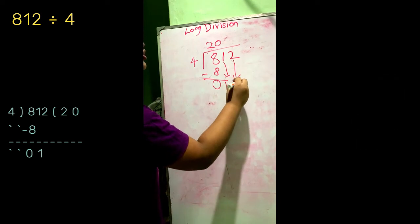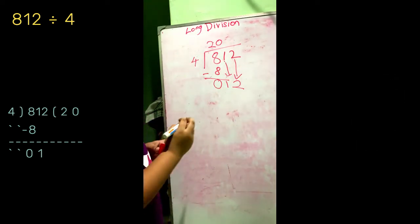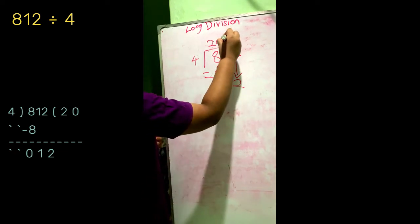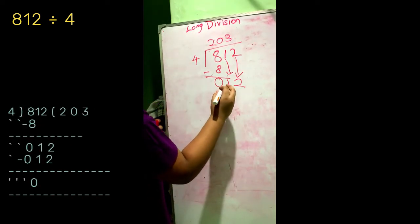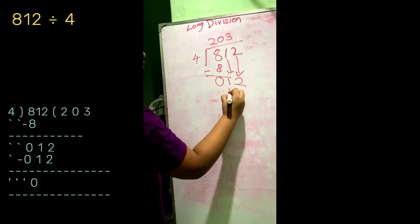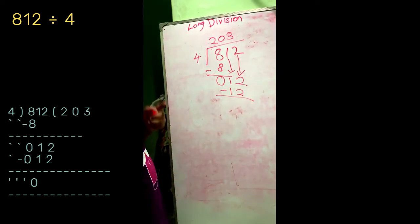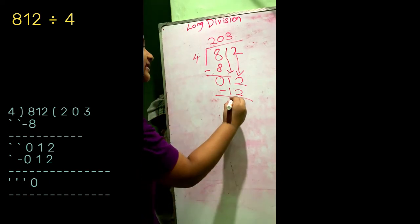Then bring down the 2. It's 12. 4 times 3 is 12, so put 3 on top and 12 on the bottom. Then you have to subtract these. 12 minus 12 is 0.